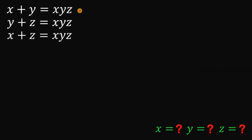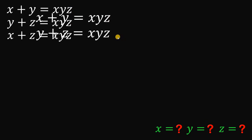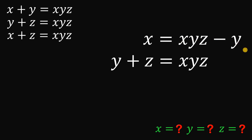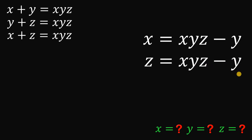Alright, so given these 3 equations, our goal is to solve for the values of x, y, and z. To answer this, we will use the first two given equations: x plus y equals xyz, and y plus z equals xyz. On the first equation, if we subtract y on both sides, we get x equals xyz minus y. On the second equation, if we subtract y on both sides, we get z equals xyz minus y. They are just the same thing, so we can say that x must be equal to z. That is our first clue.